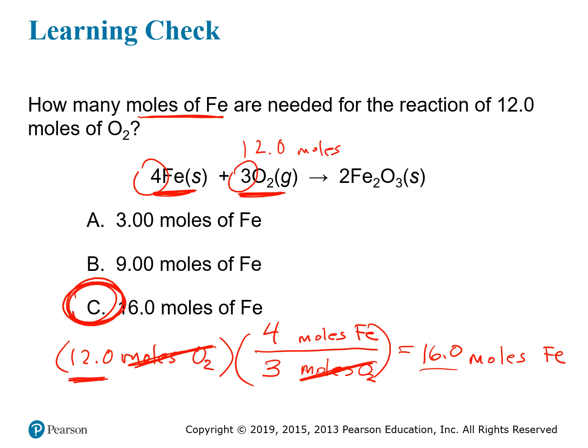That's the formal way to do it. Thinking in ratios: 12 moles of oxygen is four times the three moles of oxygen in the equation. Since we need four times as much oxygen, we also need four times as much iron. The equation says four moles of iron for three moles of oxygen, so four times four moles of iron is 16 moles of iron — confirming the answer is C, 16 moles of iron.